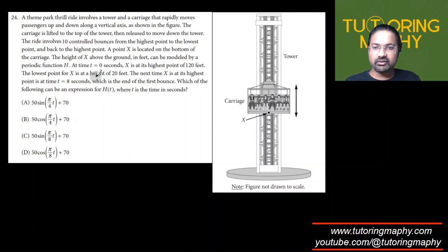Which of the following represents h? In a nutshell, we know that the maximum height is 120 at t equals 0, and the minimum height is 20. Based on these two, which options can we eliminate? Actually, we cannot eliminate any options because the 50 and 70 are the same for all options, which means the maximum value will be 120 and the minimum value will be 20.